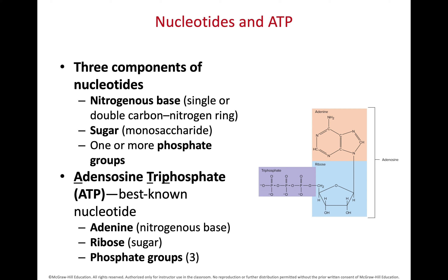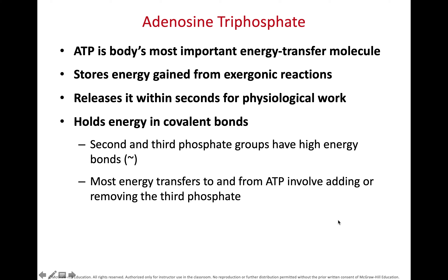ATP is a very important nucleotide in our body. It consists of one adenine, a ribose sugar, and three phosphates bonded together. We use ATP to store and transfer energy — it is the energy currency of the cell. When we store energy from breaking down food products, particularly carbohydrates, we store that energy temporarily in an ATP molecule, and then we can use it instantly to power a chemical reaction.